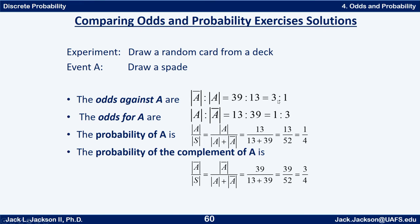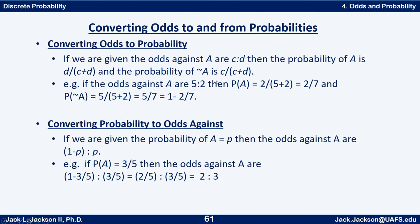How can we convert from odds — say 3 to 1 — to the probability one-fourth? Or how can we go from one-fourth back to 3 to 1? It's actually a pretty simple process. If we're given the odds against A as C to D, then the probability of A is D divided by C plus D. For example, if the odds against A are 5 to 2, then the probability of A is the second part (2) over the total (7). So that's 2 sevenths — the part-to-whole relationship, which is the probability of A.